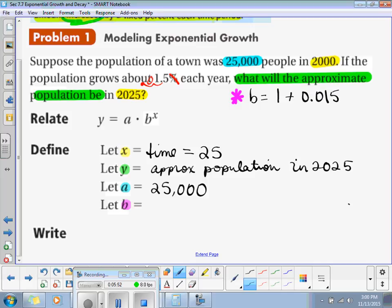You move the decimal two places to the left. Very good. So, that's going to be 0.015. And I apologize, it's supposed to be plus. It's 1 plus 0.015. That's the growth, because it's growth factor. Because it's growth, we have to add. So, B will be 1.015.